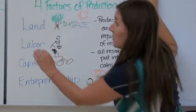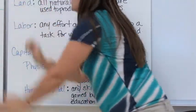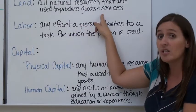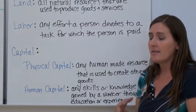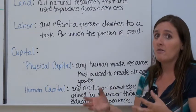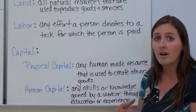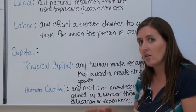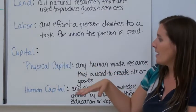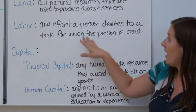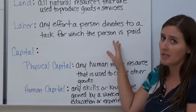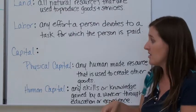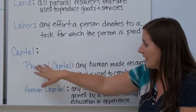Land refers to all natural resources used to produce goods and services — anything in the ground, the actual ground used to grow crops, sunshine, rain, water — anything from nature. Labor is any effort a person devotes to a task for which that person is paid, such as digging, cleaning, or any action a person performs.